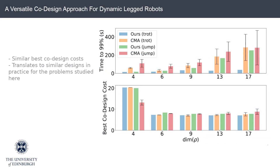We additionally compared our results to the genetic optimization algorithm CMA. Of interest is that we are able to achieve similar best co-design costs as CMA across problem dimensions for the given co-design problems. Please find additional analysis and more details about our work in our paper.